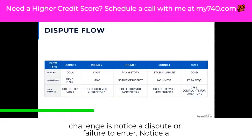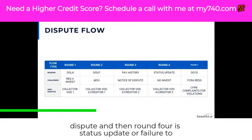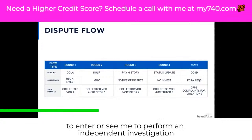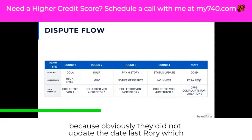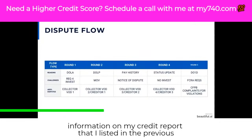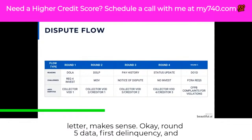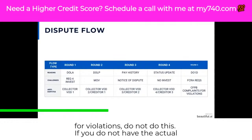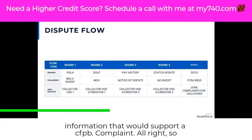Round three is payment history. The challenge is notice of dispute or failure to enter notice of dispute. Round four is status update or failure to update the date last reported, and no investigation — their failure to perform an independent investigation, because obviously they did not update the date last reported, which tells you right there they did not investigate the negative information on my credit report listed in my previous letter. Round five is date of delinquency and FCRA requirements, as well as sending out a CFPB complaint for violations. Do not do this if you do not have the actual information that would support a CFPB complaint.